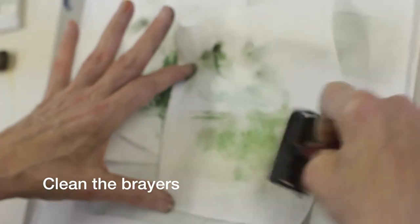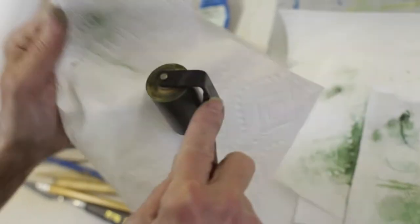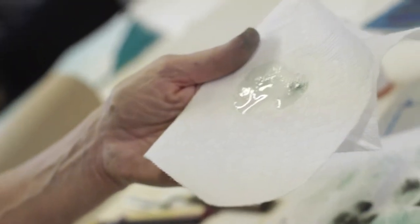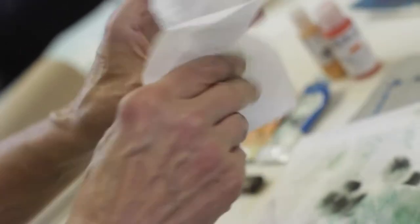Clean up your tools with baby oil or cooking oil and paper towels. Use it to clean your hands also. It's not a nasty solvent.